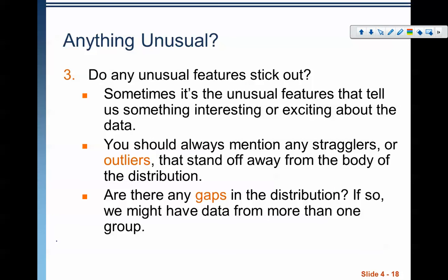Finally, anything unusual. Sometimes the unusual features tell us something really interesting or exciting about a data set. You should always mention any stragglers or outliers that show up inside of a distribution, because the outliers often tell a very interesting story. For example, there is a data set in the book where it's talking about the average wind speeds for a variety of days. I think it's actually in Chapter 5. And one of the wind speeds is just massive. It's huge. It's a huge outlier in comparison to the rest of the data. And so, while that outlier doesn't fit with the rest of it, that outlier had a very interesting occurrence that day. It was a hurricane.